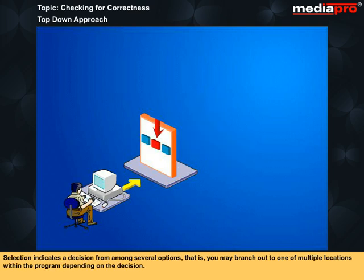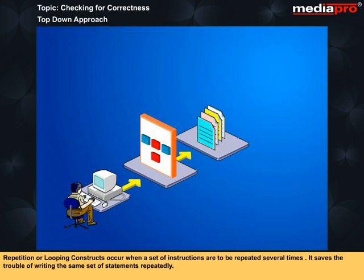Selection indicates a decision from among several options, that is you may branch out to one of multiple locations within the program depending on the decision. Repetition or looping constructs occur when a set of instructions are to be repeated several times. It saves the trouble of writing the same set of statements repeatedly.